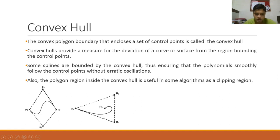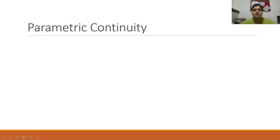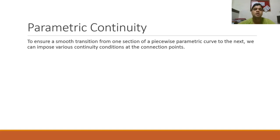We have a starting control point, an ending control point, and intermediate control points. The intermediate control points try to pull the curve towards themselves, while the starting and ending points are the points through which the curve actually passes. Parametric continuity is an essential property for joining two curves together, and at what continuity level the curves are joined is what the continuity condition defines.